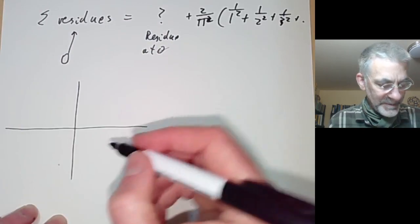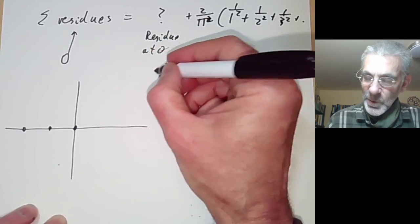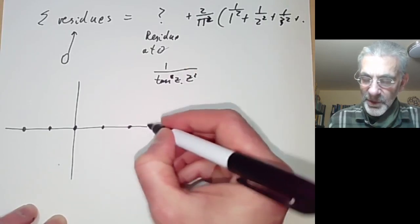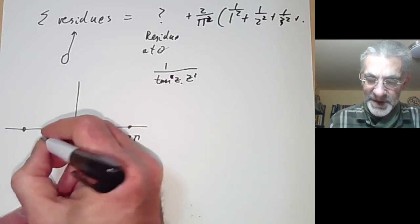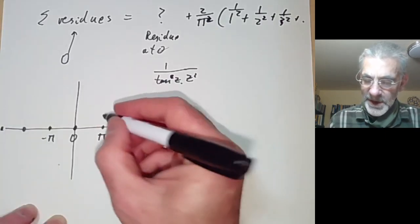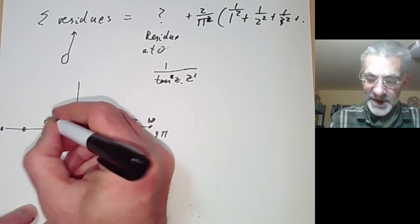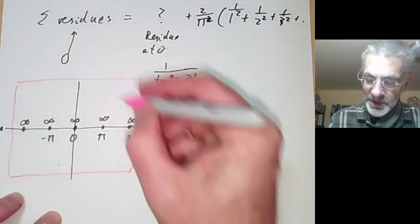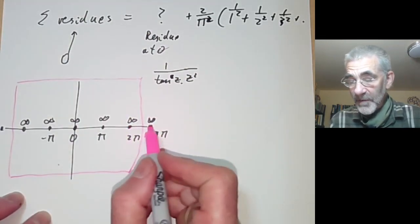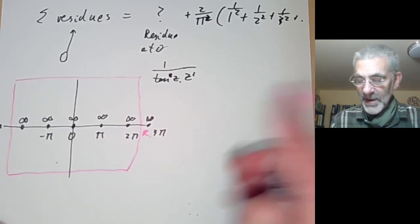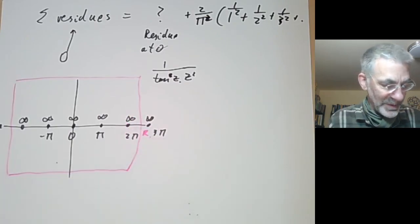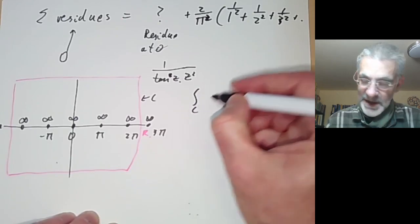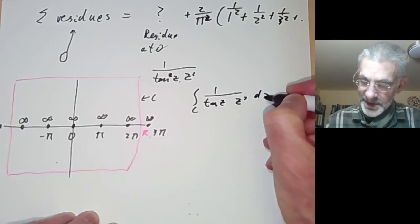We look at the function 1/(tan(z)·z²), which is holomorphic except at the points 0, ±π, ±2π, and so on. We integrate over a big square that goes halfway between two of these poles — so between nπ and (n+1)π in general. We want to show that if this contour is C, then the integral over C of 1/(tan(z)·z²) dz is small.